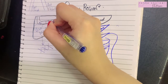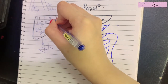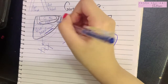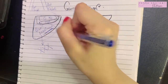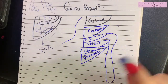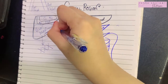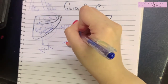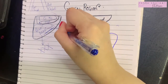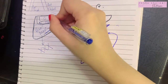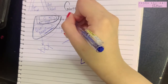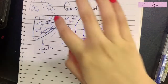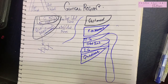Then we have the gluteus medius and minimus. It is necessary to know that the gluteus maximus is supplied by the inferior gluteal nerve, which is completely committed to the gluteus maximus and only supplies it. The gluteus minimus and medius are supplied by the superior gluteal nerve.